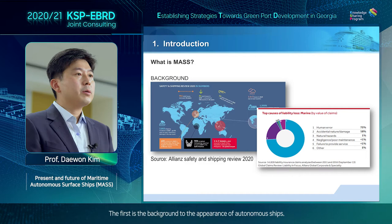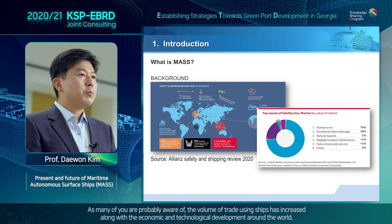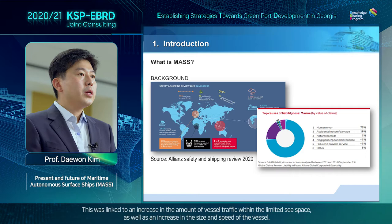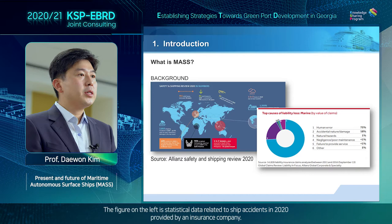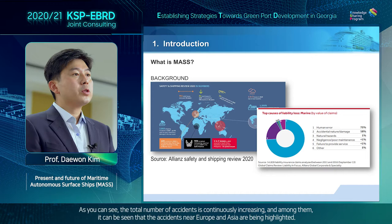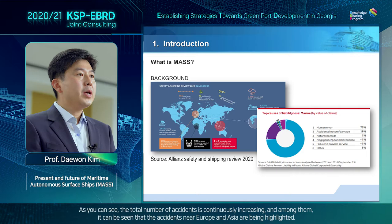The first is the background to the appearance of autonomous ships. As many of you are probably aware, the volume of trade using ships has increased along with the economic and technological development around the world. This was linked to an increase in the amount of vessel traffic within the limited sea space, as well as an increase in the size and speed of vessels. The figure on the left is statistical data related to ship accidents in 2020, provided by an insurance company. As you can see, the total number of accidents is continuously increasing, and among them, the accidents near Europe and Asia are being highlighted.